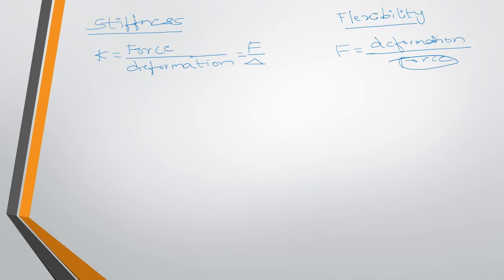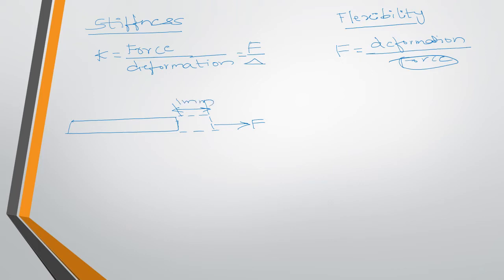Let us take two objects to illustrate stiffness. Here is an object with a deformation of 1 mm when a force F is applied. How do we declare a material as less stiff or more stiff? If more force is required to produce unit deformation, we call it more stiffness. If less force is required to produce unit deformation, we call it less stiffness.